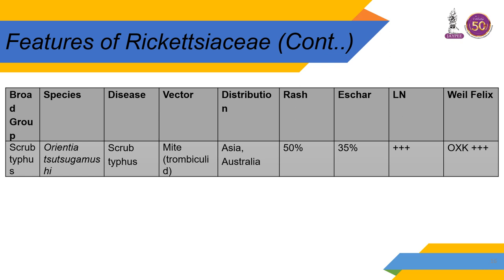The third category — scrub typhus — is caused by Orientia tsutsugamushi, which is now classified separately from Rickettsia. It is transmitted by mite and is prevalent in Asia. Rash is present, eschar is present, lymph nodes are enlarged, and the Weil-Felix reaction shows OXK strongly positive, not OX-19 or OX-2.